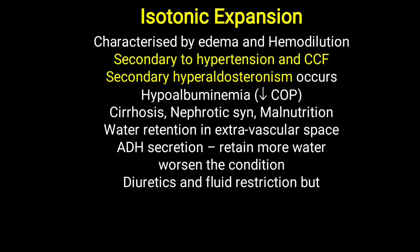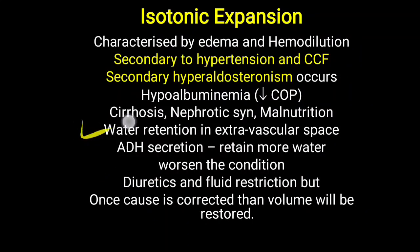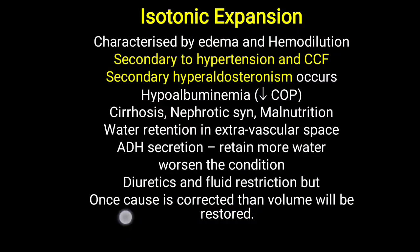Isotonic expansion is like a vicious cycle: there is already high water volume, and secretion of ADH as well as activation of the renin-angiotensin-aldosterone system further aggravates the situation. Diuretics and fluid restriction are the main treatment for isotonic expansion. Once the underlying cause — such as cirrhosis, nephrotic syndrome, malnutrition, CCF, or hypertension — is properly corrected, the albumin level and fluid volume will be restored properly.